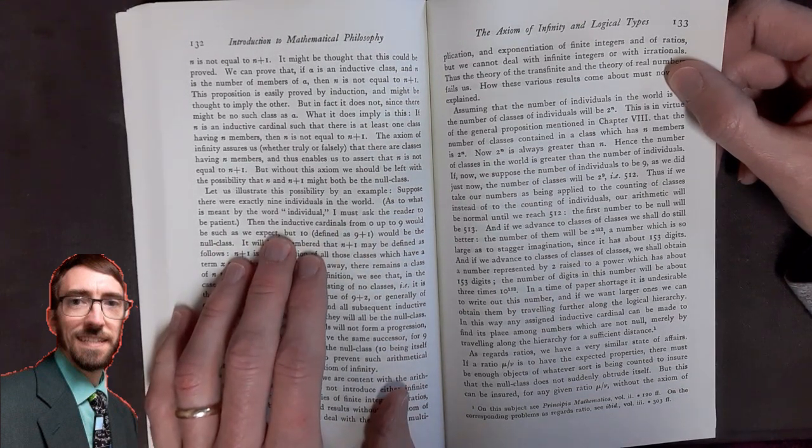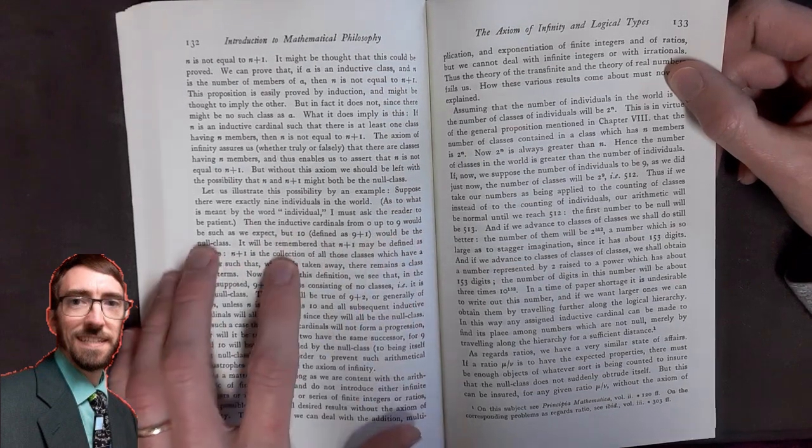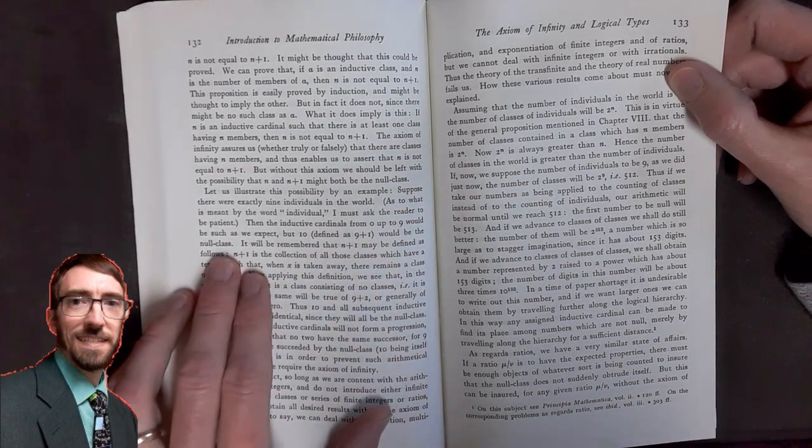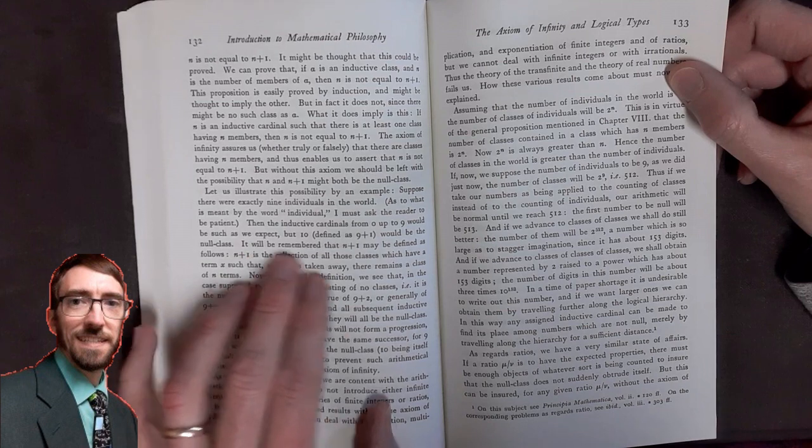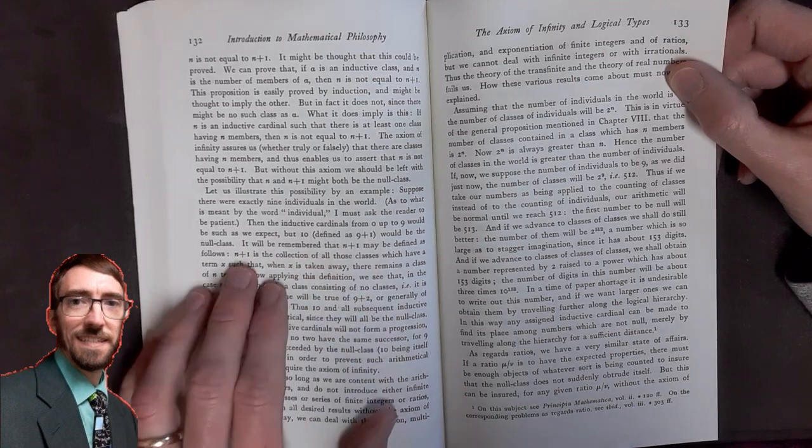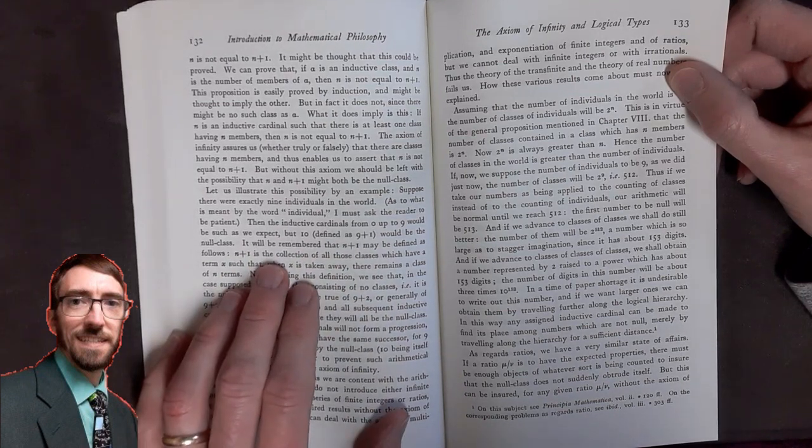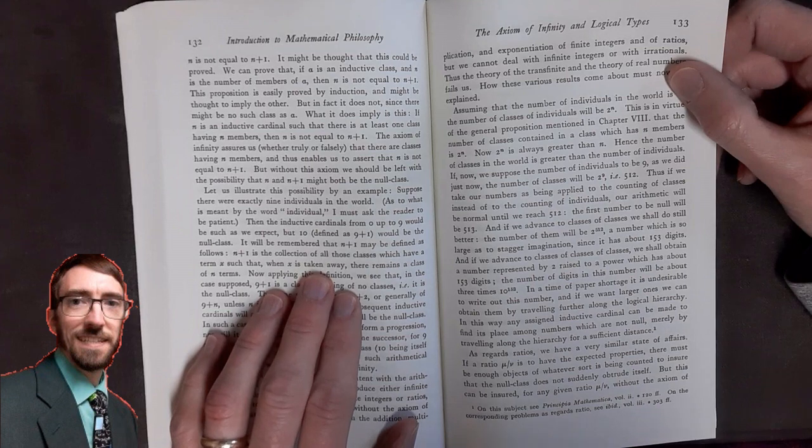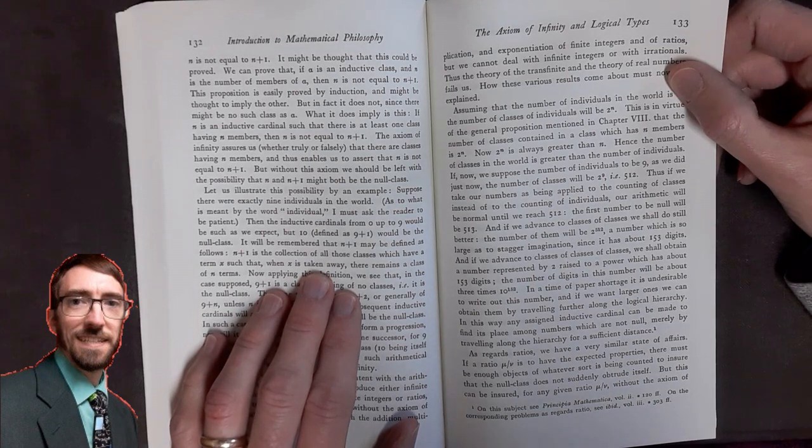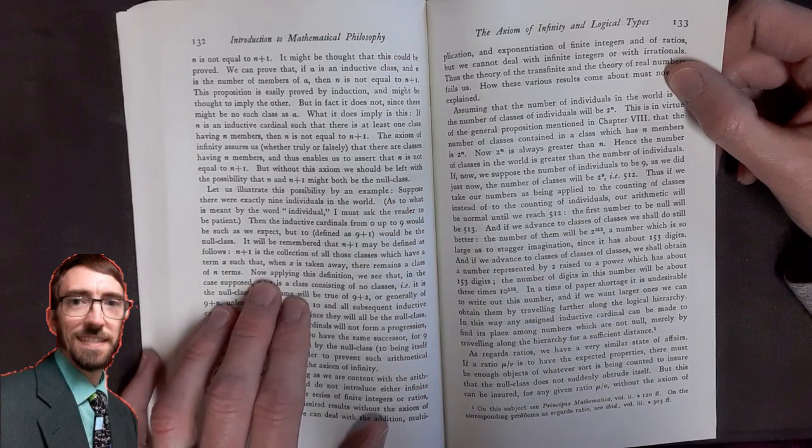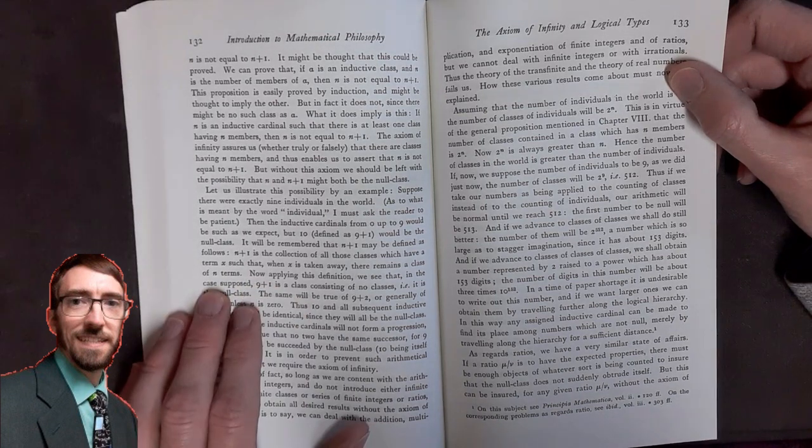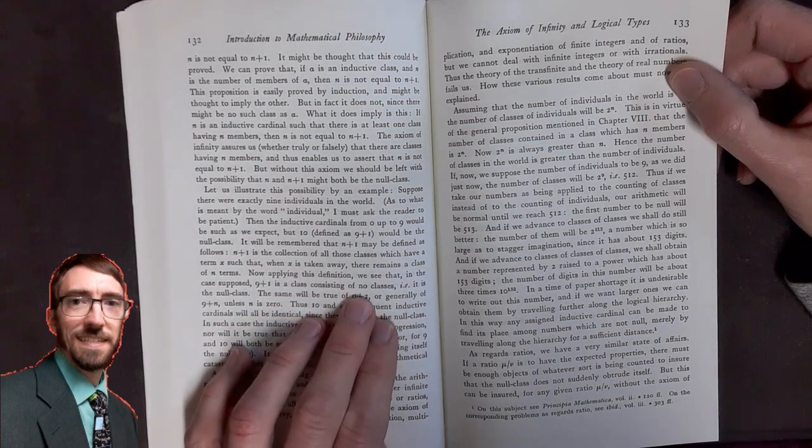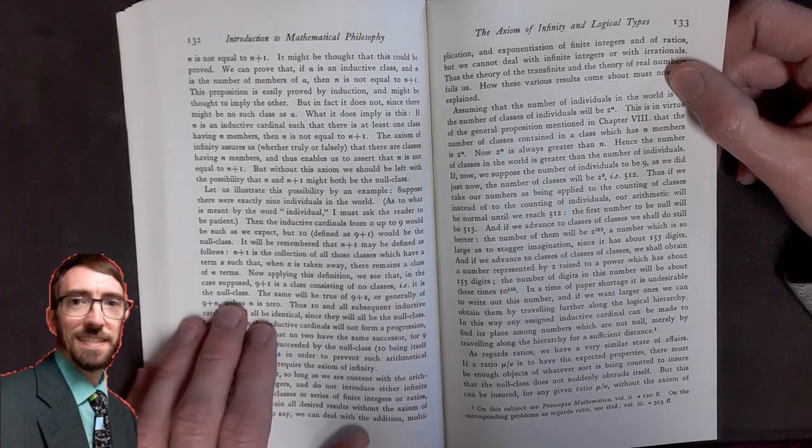Then, the inductive cardinals from 0 up to 9 would be such as we expect. But 10, defined as 9 plus 1, would be the null class. It will be remembered that n plus 1 may be defined as follows: n plus 1 is the collection of all those classes which have a term x, such that when x is taken away, there remains a class of n terms. Now, applying this definition, we see that in the case, suppose 9 plus 1 is a class consisting of no classes. It is the null class.